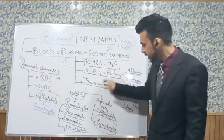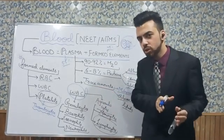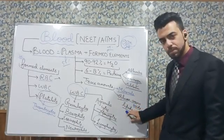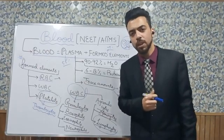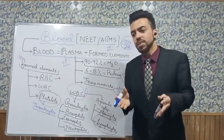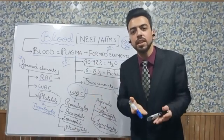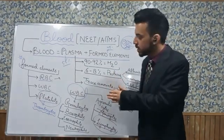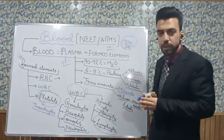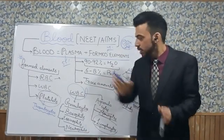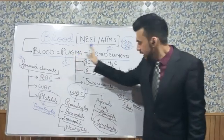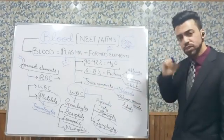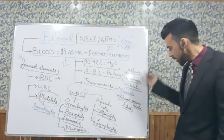So that is the plasma component — 55% of blood. Plasma is 90 to 92% water, the remaining portion is proteins, and in trace amounts there are different substances: minerals such as Na⁺, Mg²⁺, Ca²⁺, and bicarbonate ion HCO₃⁻, as well as glucose, amino acids, and lipids.